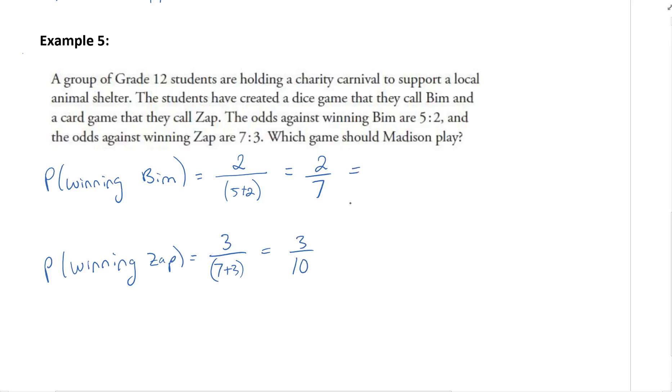Changing this to a percentage, 2 out of 7 is 28.5%, and 3 out of 10 is 30%. Which game should Madison play? The one with a greater probability of winning, which would be 30%.